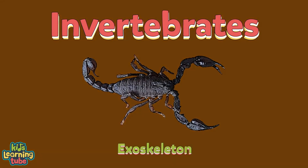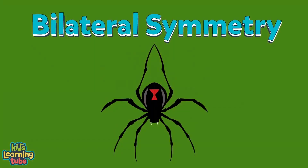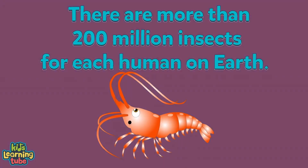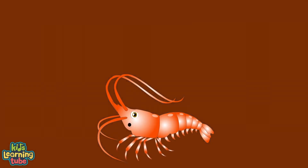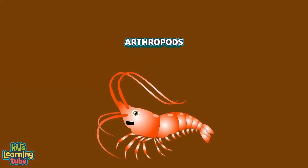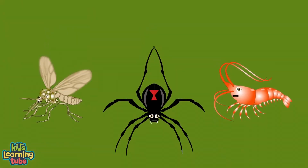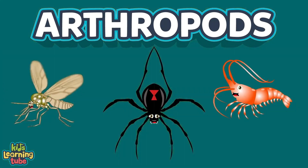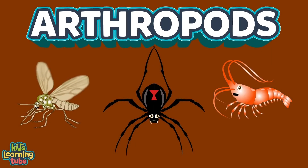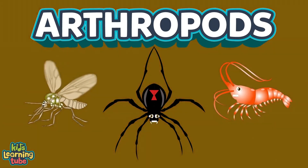Arthropods are invertebrates — they have no backbone and have hard outer bodies called exoskeletons. They have bilateral symmetry, meaning the right half of their bodies is a mirror image of the left. There are more than 200 million insects for each human on earth, and over 800,000 named species of arthropods. Remember — they've been here longer than the dinosaurs!